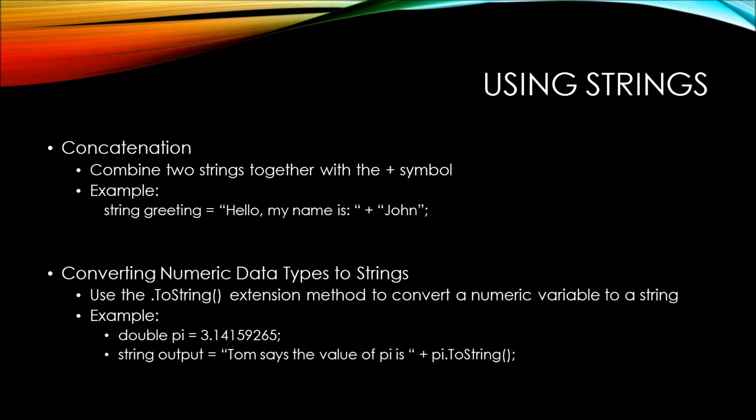So for example, if we have the variable called pi, and we have its initial value set to the value of pi, then we want to include that as part of a string, you can see here that we're using the toString extension method to convert that variable of pi to a string. Then we're concatenating it to the statement, Tom says the value of pi is.